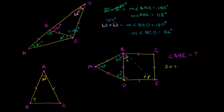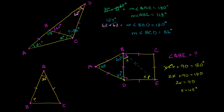We have x plus x plus 90 equal to 180 degrees. That gives 2x plus 90 equals 180; subtract 90 from both sides to get 2x equals 90; divide both sides by 2 and x equals 45 degrees. Angle ABE is going to be equal to the 60 degrees plus the 45 degrees, so angle ABE equals 105 degrees.